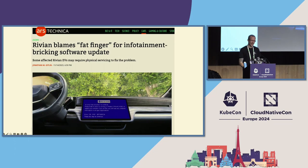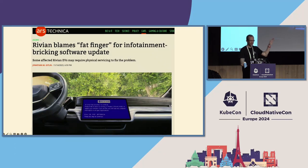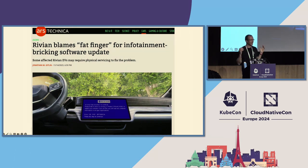My favorite example, which isn't actually a security compromise: EV vendor Rivian delivered an infotainment update that bricked their systems because someone fat-fingered the build and pushed out a build with the wrong security certificates. All of their deployed EV systems suddenly couldn't use the infotainment system because they had a test certificate. Describing it as a 'fat finger' implies a very manual release process that really worries me. There's a strong overlap between software quality, engineering rigor, and software security.